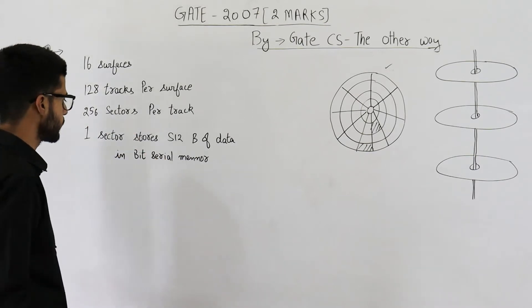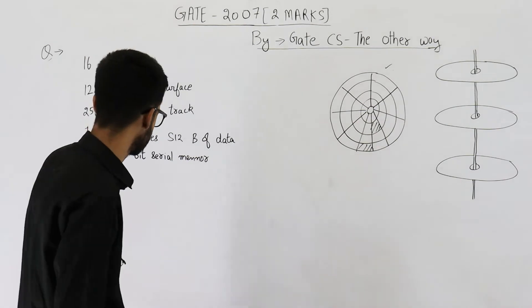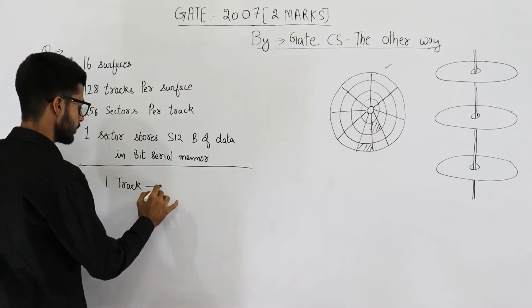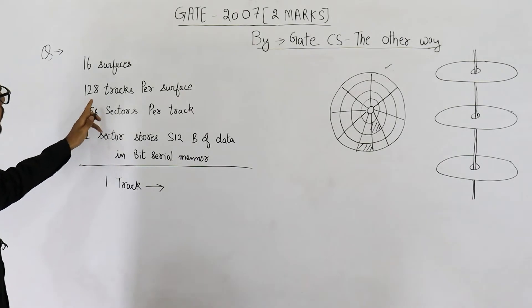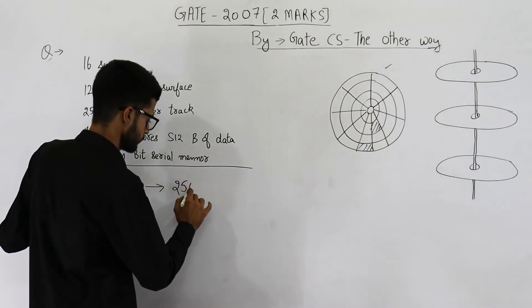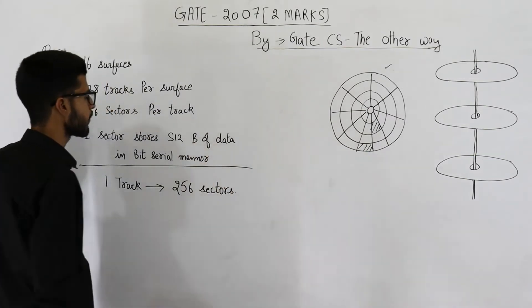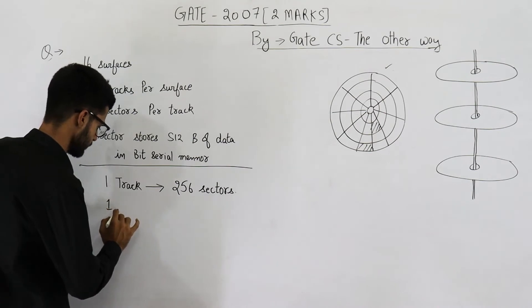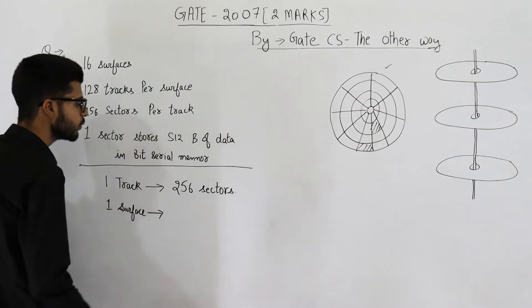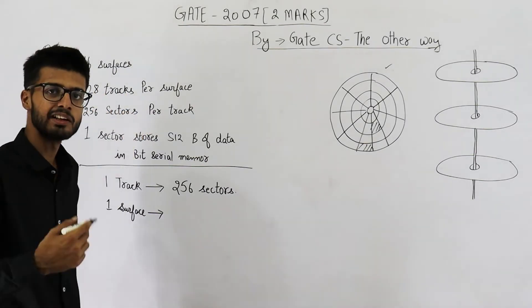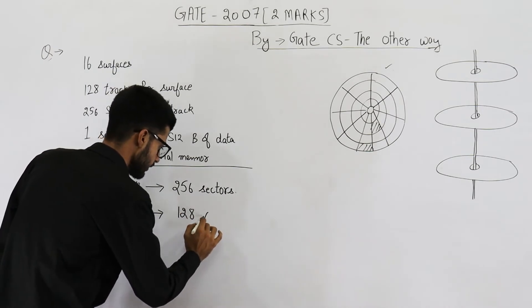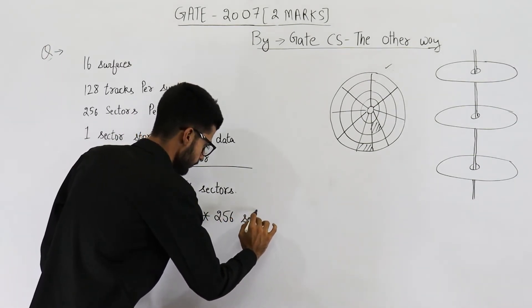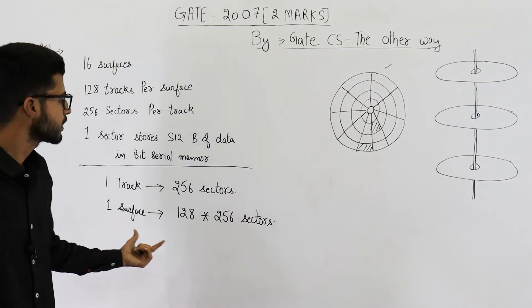Now, one sector is storing 512 bytes of data. How much will be the total capacity of disk? So you can see one track is having 256 sectors. And each surface is having 128 such tracks. So one surface will have 128 tracks into 256 sectors.